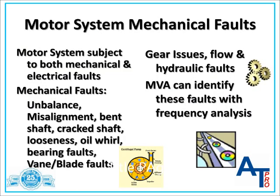The electrical motor system consists of the electrical and mechanical subsystems. The mechanical subsystem consists of the motor shaft, coupling, driven machine, and the process itself. Since all of these components are mechanical in nature, they are subject to any fault associated with the rotating machine. Faults such as unbalance, misalignment, bent shaft, cracked shaft, mechanical looseness, oil whirl, rolling element bearing faults, vane passing forces, gear meshing, flow, and other hydraulic faults are identified using MVA if the force is strong enough.